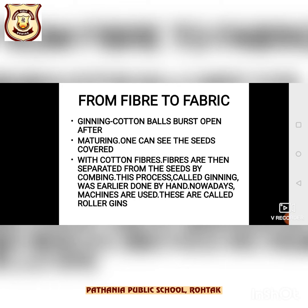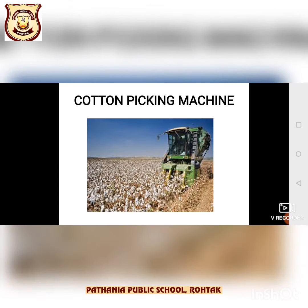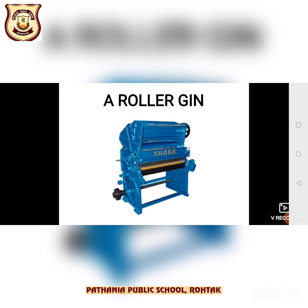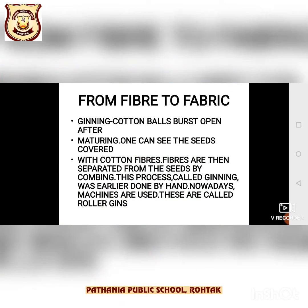First, ginning is done. Cotton balls burst open after maturing, and one can see the seeds covered with cotton fibers. Fibers are then separated from the seeds by combing, and this process is called ginning. Ginning was earlier done by hand, but nowadays machines are used and these are called roller gins. As you can see in this picture, through this machine ginning is done.